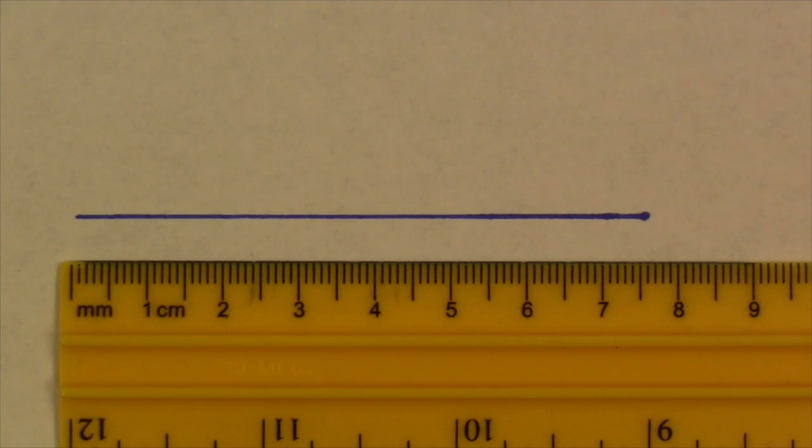To measure the length of the line, first you want to identify the metric side of your measuring device. Now this is the metric side, it's graduated in millimeters and centimeters, so that's the first thing you want to do. The next thing you want to do is identify the value of every little line, or every little tick mark, or every little graduation on this device.